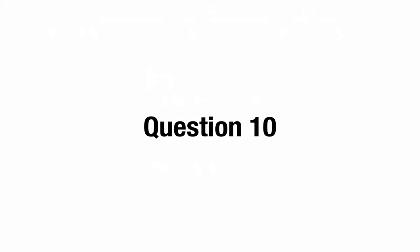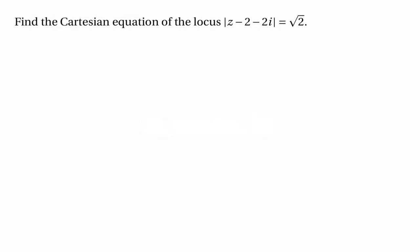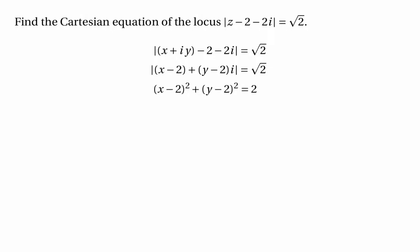Let's move on to question 10. This asks us to find the Cartesian equation of the locus |z minus 2 minus 2i| equals √2. Writing z as x plus iy, we get |x minus 2 plus (y minus 2)i| equals √2, which means the square root of (x−2)² plus (y−2)² equals √2, or (x−2)² plus (y−2)² equals 2. That's the Cartesian equation of this locus.